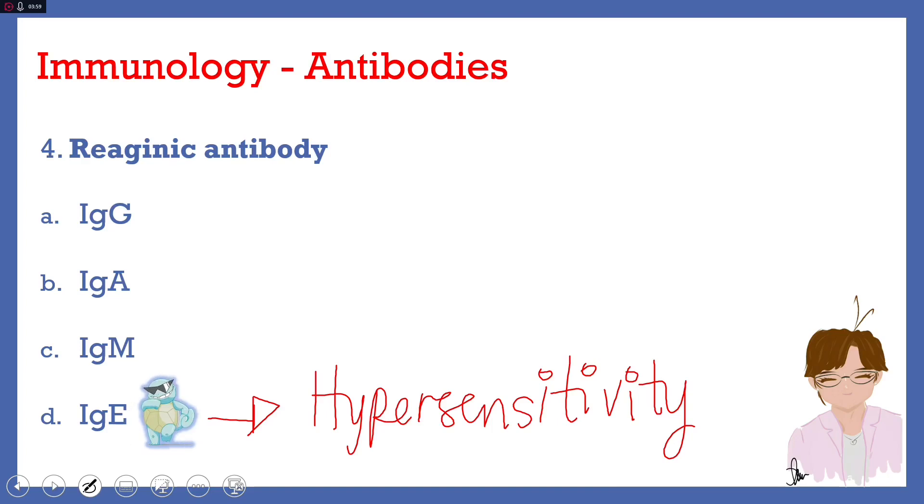And since we're talking about the functions of our antibodies, let's just have a quick look on our antibodies. Alright? So we have IgG, IgA, IgM, IgD, and IgE. All of these are immunoglobulins. And we want to know if they are monomeric in structure or not.